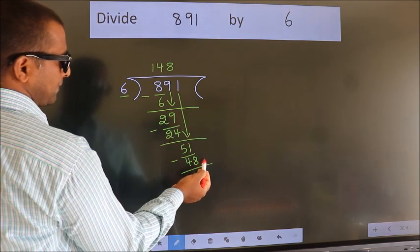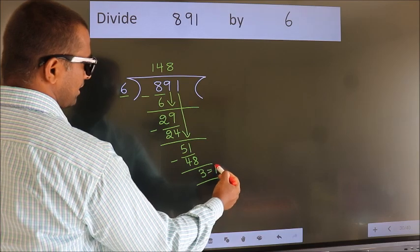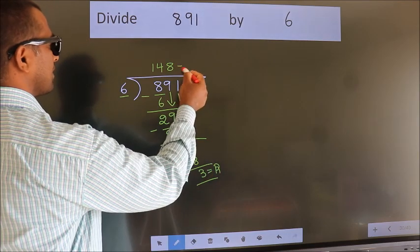No more numbers to bring down. So we stop here. This is our remainder. This is our quotient.